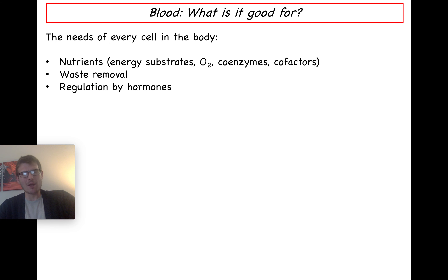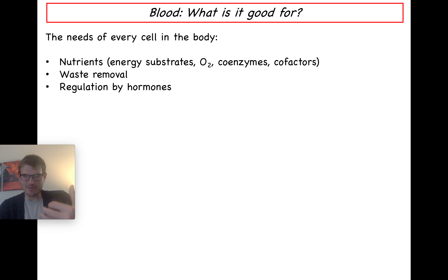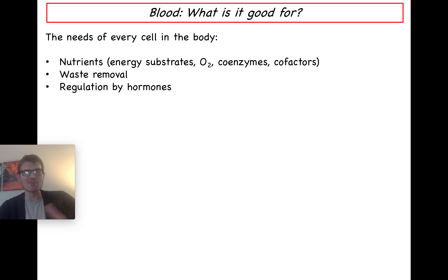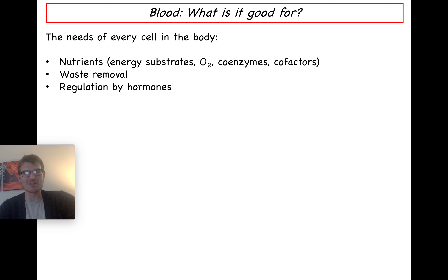What is blood good for? Let's look at this through the lens of what every cell in your body needs. Every cell needs nutrients — energy substrates like carbohydrates, proteins and amino acids, fatty acids, oxygen, coenzymes, cofactors, vitamins, and so on. Every cell that goes through metabolic processes produces waste products like carbon dioxide and urea that need to be removed in a timely fashion. And every cell needs to be regulated by a variety of different hormones.